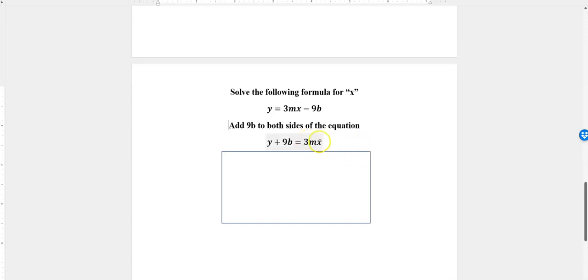I want to get x by itself because I'm solving for x. I want to get rid of 3m, and that means I divide both sides by 3m. What that looks like is y plus 9b over 3m and 3mx over 3m. You can see the 3m on the right top and bottom cancel out leaving x.